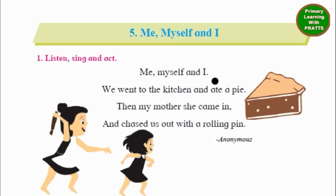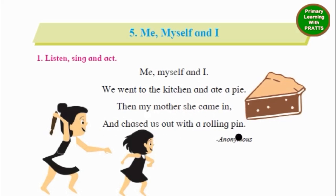Let's read it again once more. Such a lovely poem. Me, Myself and I. We went to the kitchen and ate a pie. Then my mother, she came in, and chased us out with a rolling pin. A rolling pin is the one with which we make rotis and chapatis, which we use to roll.